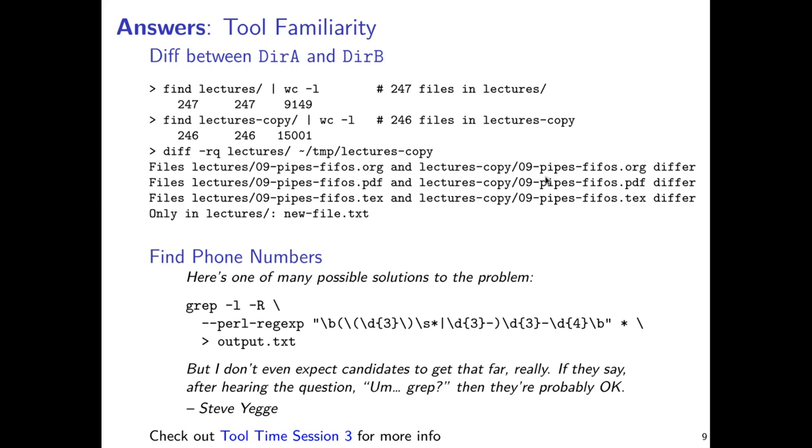Over here you see diff dash RQ, lectures, and this lectures copy. The dash R is short for recursive, and Q is quiet, which will only show the differences. When passed directories instead of files, diff automatically adapts to show the differences based on those directory trees. If you know something about diff and its capabilities, you might sort of guess at that. Then you buzz into the manual, man diff, and look around.